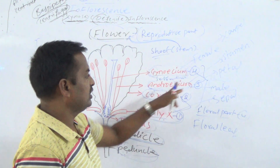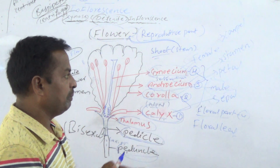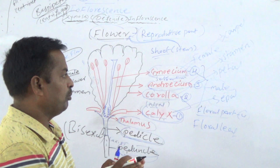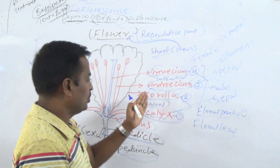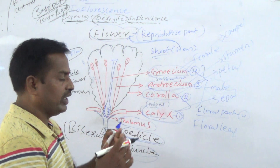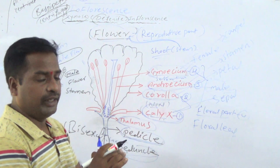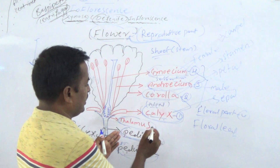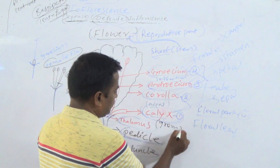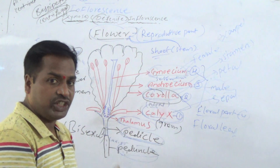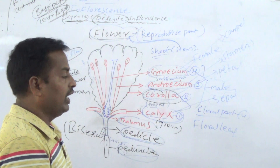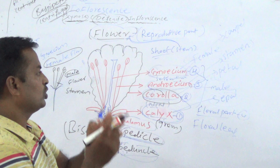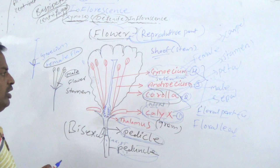Calyx is a protective layer. The second floral part is Corolla, and the unit of Corolla is the petal. Petals are also two types: Polypetal, meaning free, and Gamopetalous, meaning united or fused. Based on Corolla, it is formed in different shapes and different colors to attract insects. Calyx is always green in color, but Corolla is formed in different colors and different shapes and morphology.